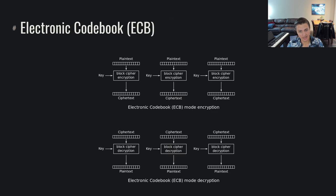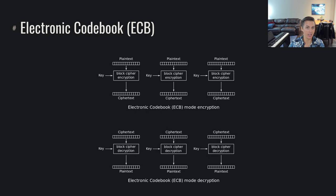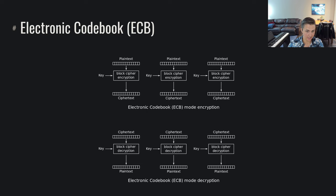This method of encrypting each piece block by block is known as the Electronic Code Book, or ECB mode. We just take our 16 bytes, encrypt it, get 16 bytes of ciphertext, and do this again on the next 16-byte block until we've done all blocks. Decryption is very simple — we just throw the ciphertext through with the key to get the plaintext. This is ECB mode of encryption.